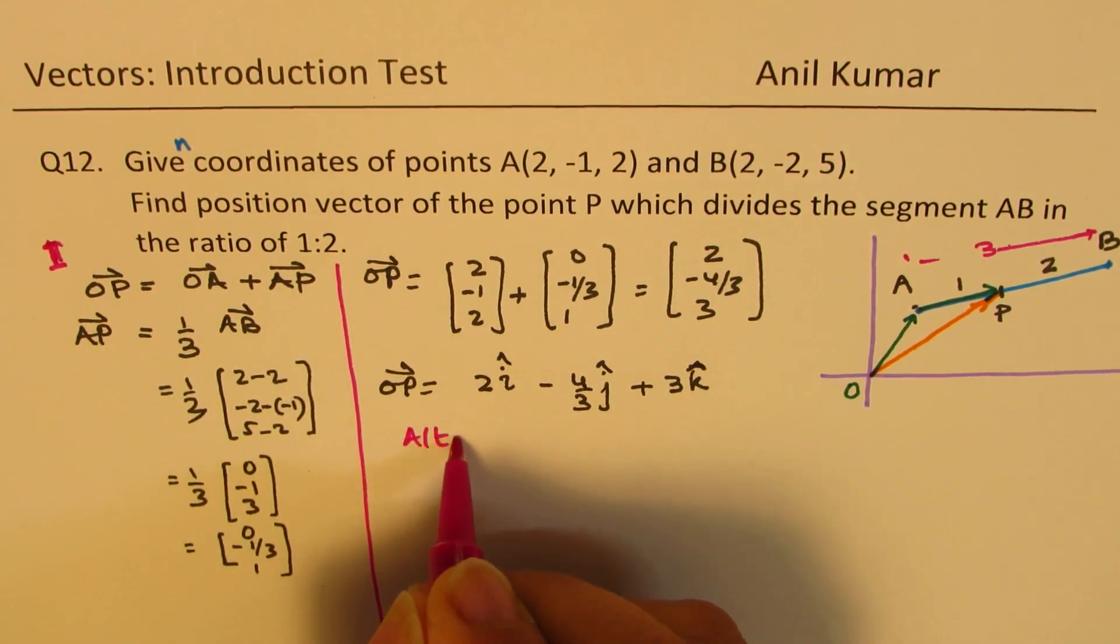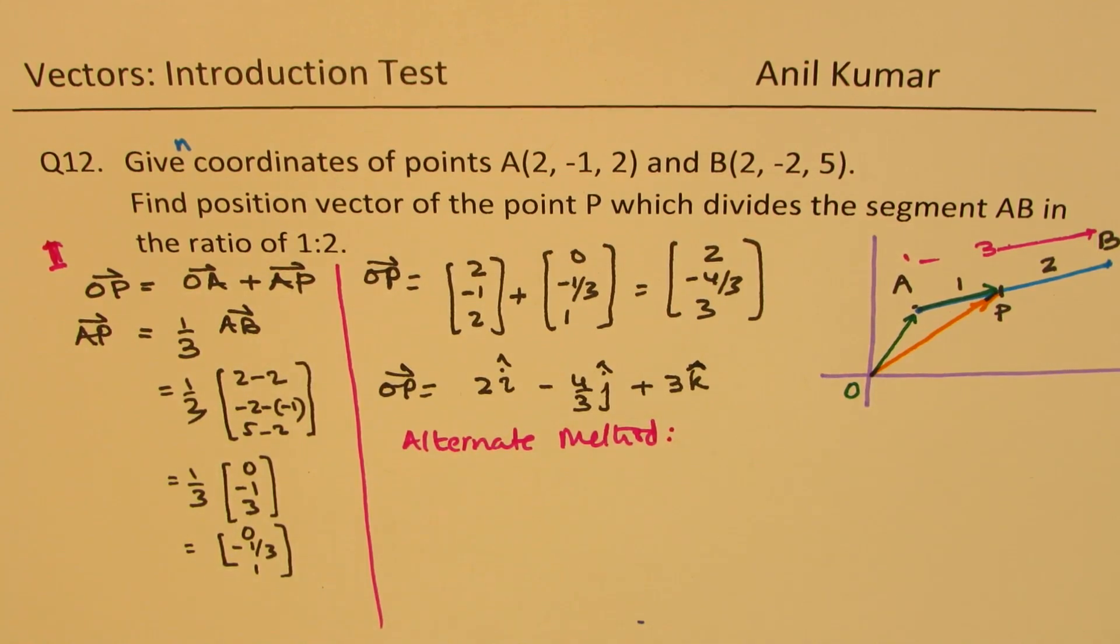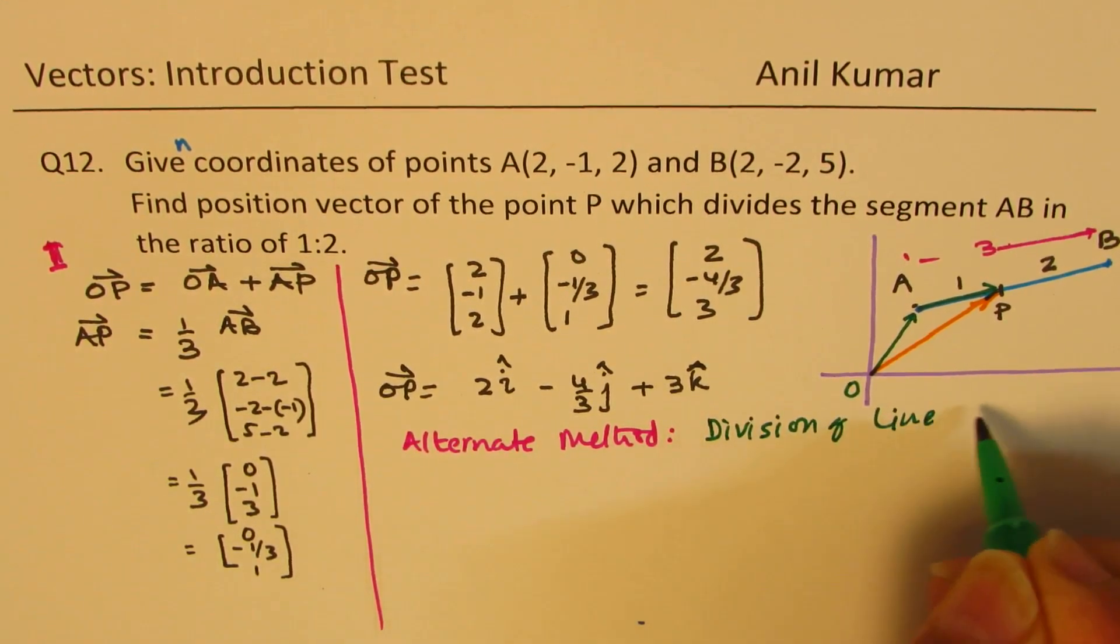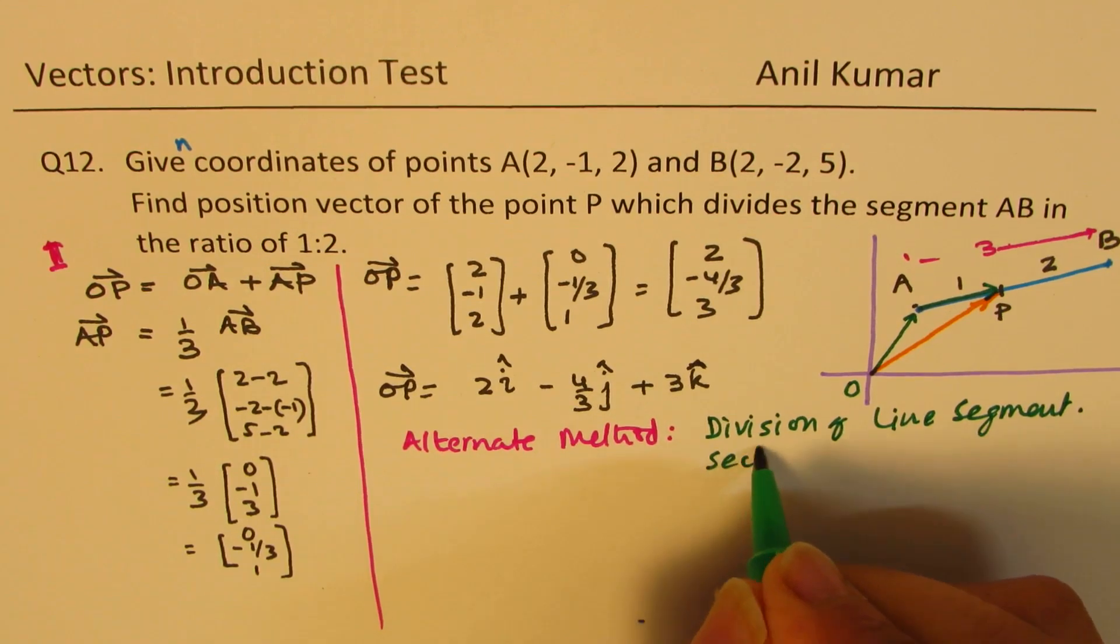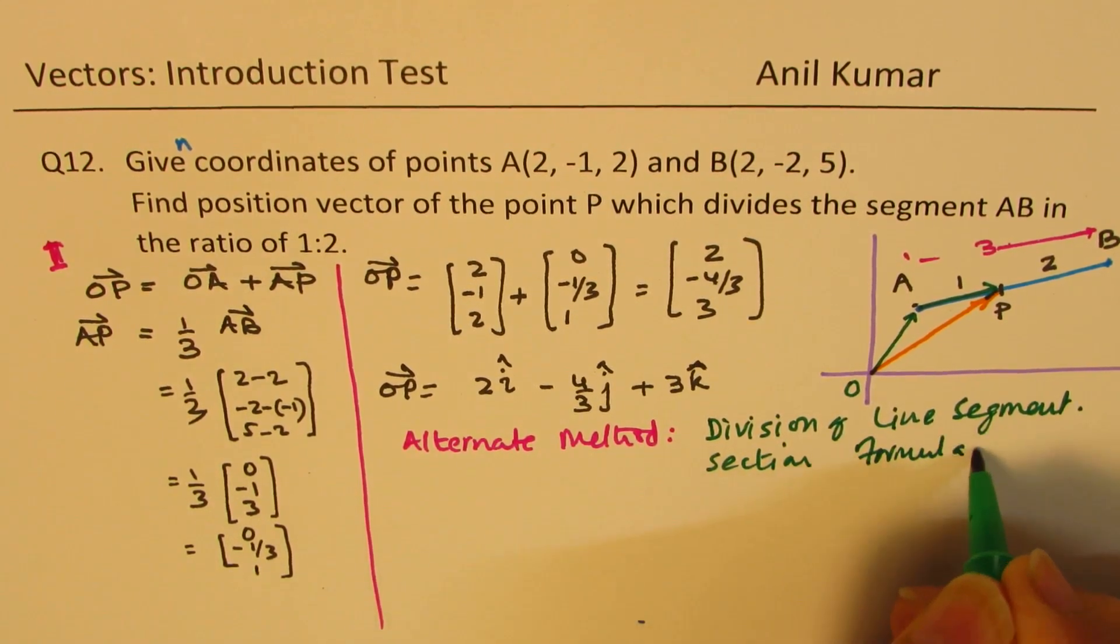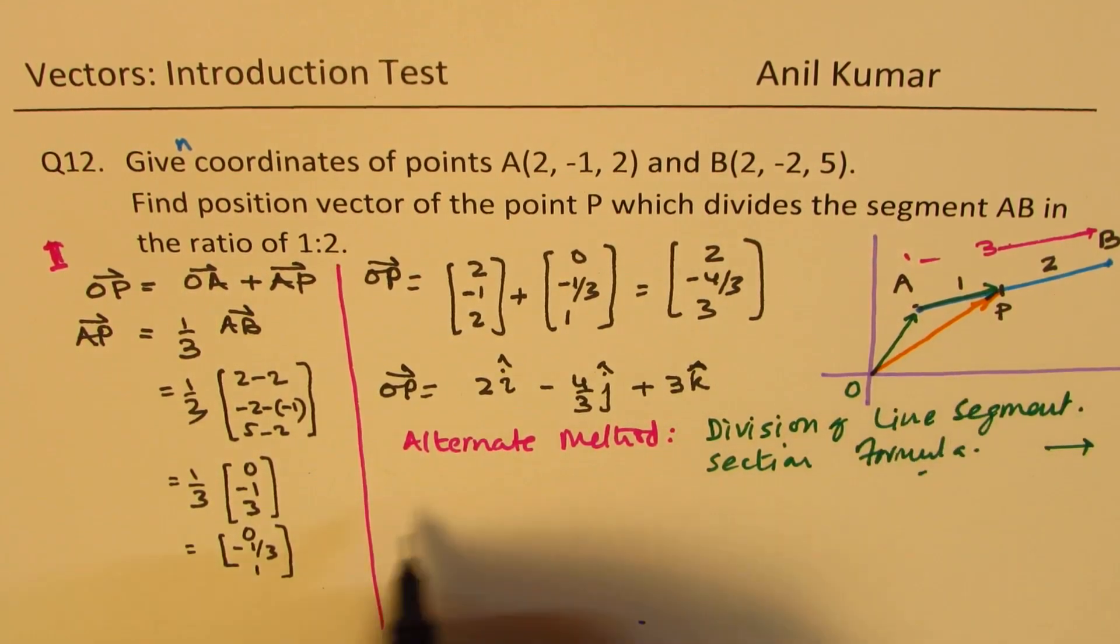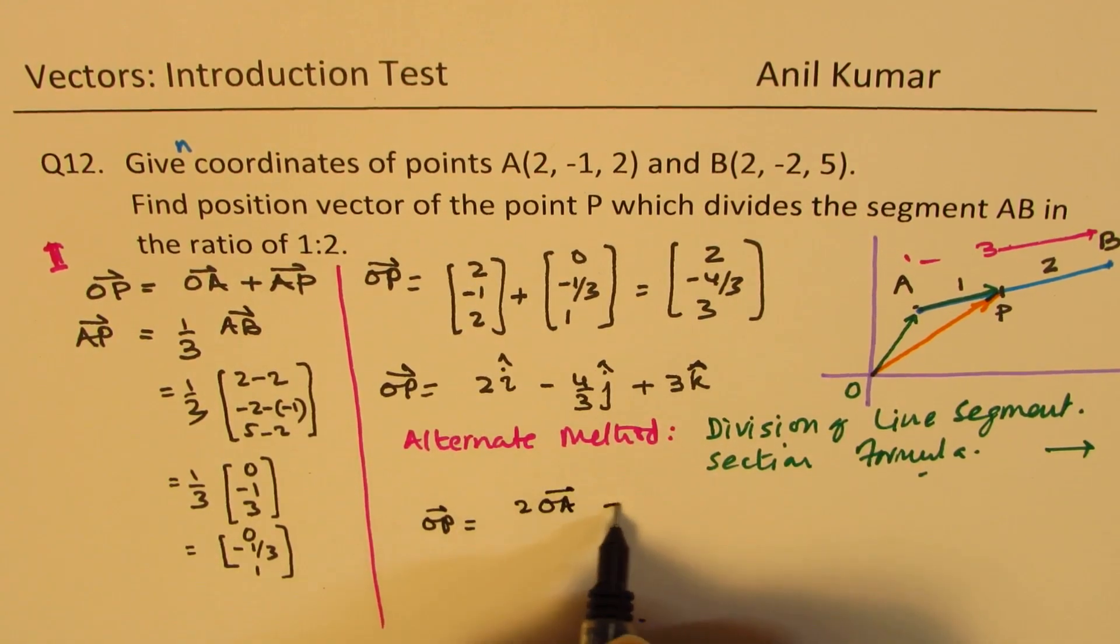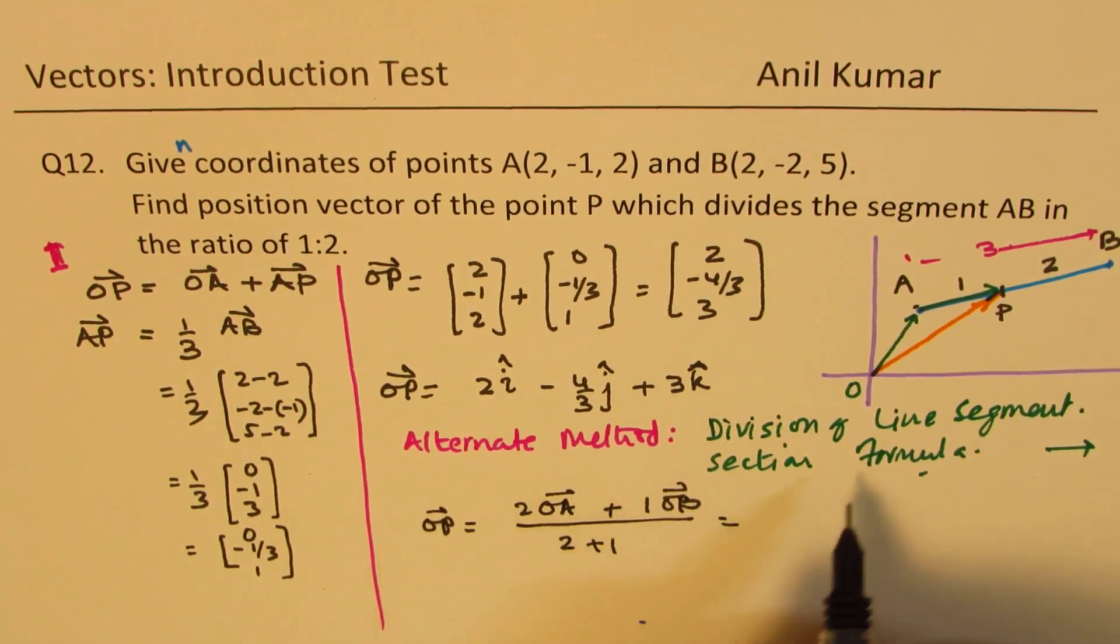Here is an alternate method, which we work on line segment division. We use section formula. I am not getting into details of this. There are some references which you can check. From there, we can directly get the value OP.